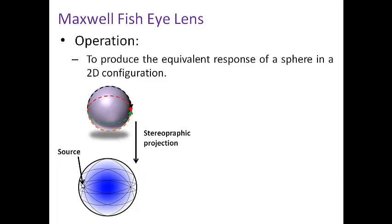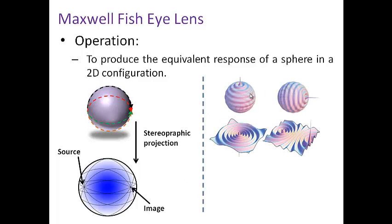If we have a source, it will produce an image on the other side. If we have an emission in one part of the sphere, we obtain sub-wavelength resolution on the other side of the sphere with the same source. We can also do this in a plane - if we have a source, we obtain the image on the other side.